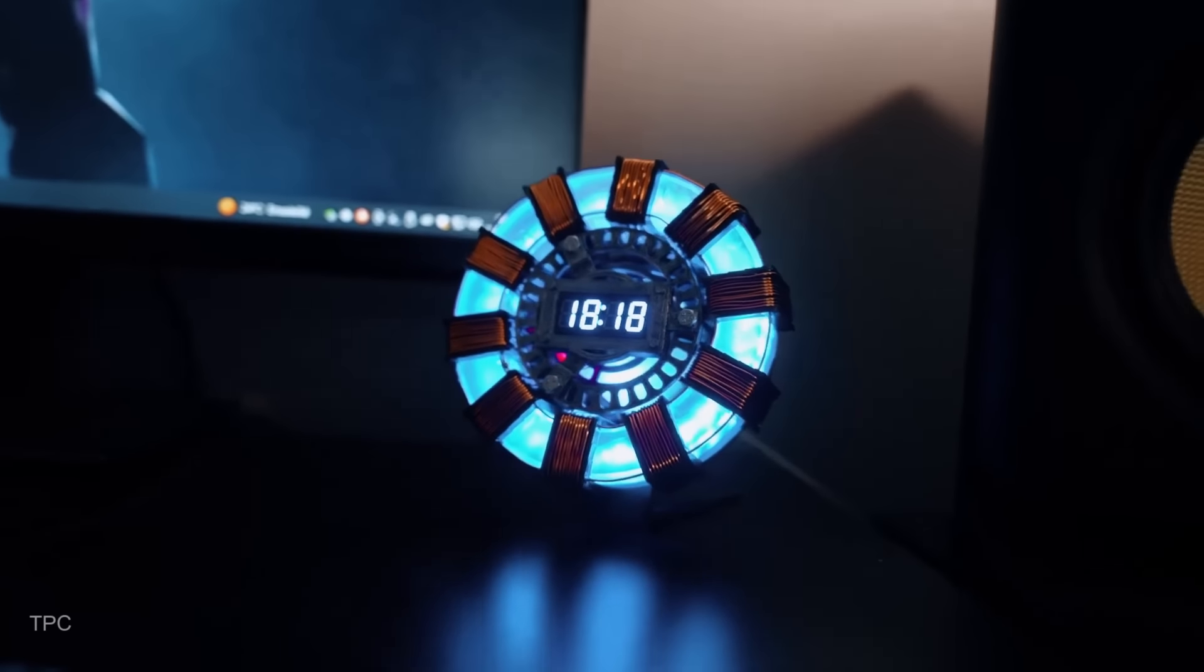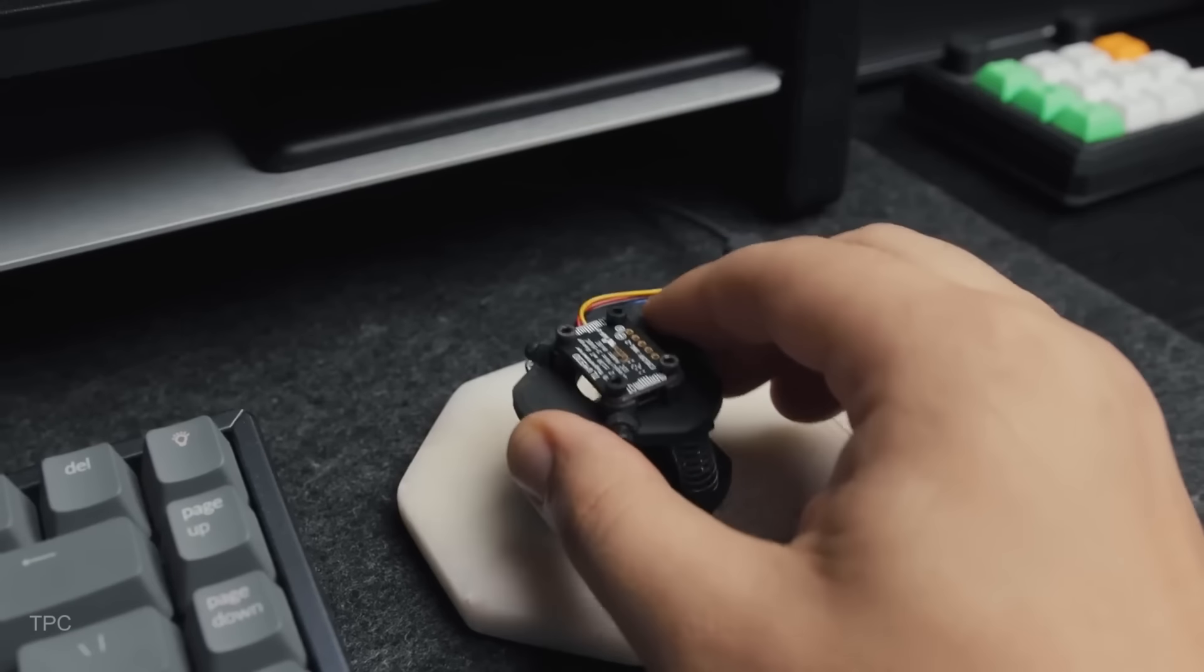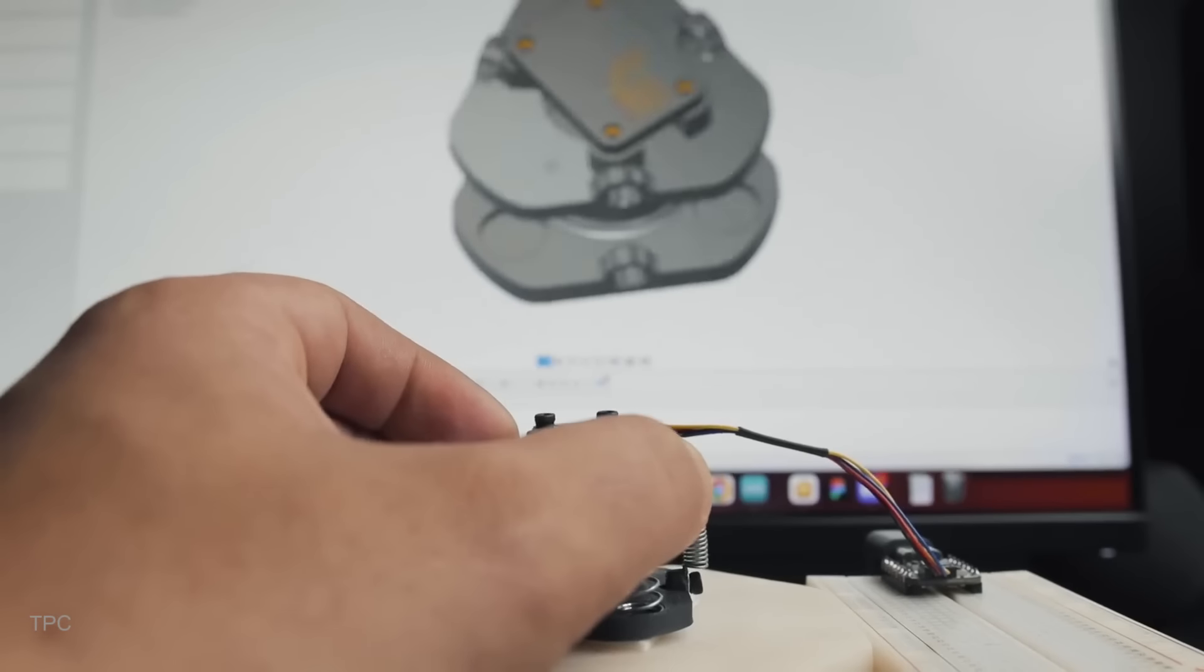This space mouse is equipped with a magnetometer, capable of detecting magnetic motion in three directions. Salim mounted it on a spring system, allowing for smooth, precise turning. He then mapped the magnetic motions to correspond with mouse movements and keyboard actions.